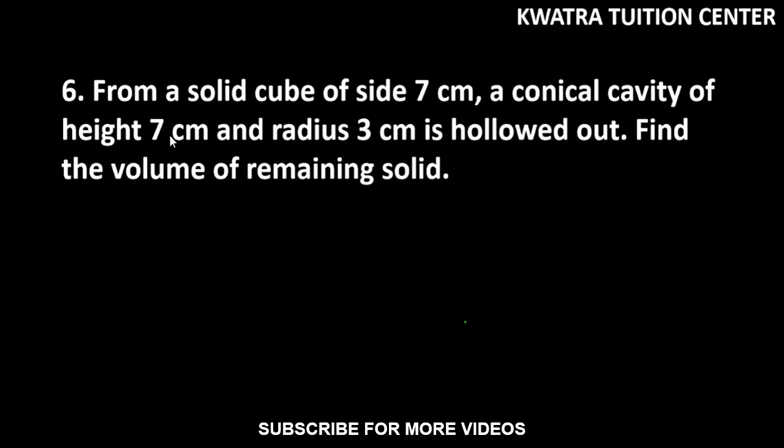Let's start with question number 6. It says from a solid cube of side 7 cm, a conical cavity of height 7 cm and radius 3 cm is hollowed out.